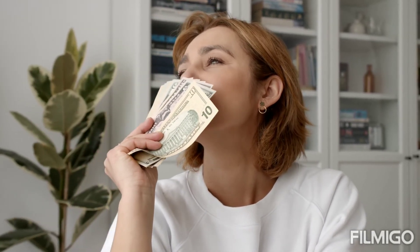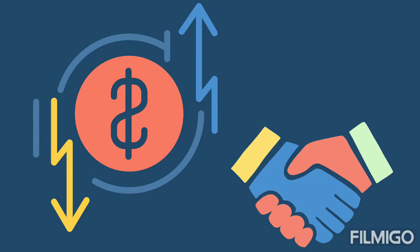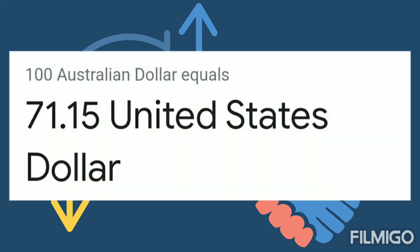Hey guys, subscribe for more new videos. Today, 100 AUD rate in United States dollar — 100 AUD equals 71.15 USD.